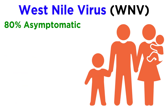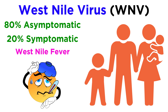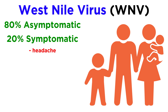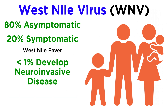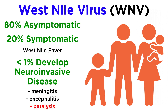It turns out that about 80% of human infections of West Nile virus are completely asymptomatic. For those that show symptoms, a good portion of them get West Nile fever, which is characterized by acute onset of headache, fever, fatigue, muscle pain, weakness, and malaise, along with gastrointestinal symptoms and sometimes a rash. Less than 1% of people infected with West Nile virus develop neuroinvasive disease, which can show up as serious meningitis, encephalitis, or paralysis.